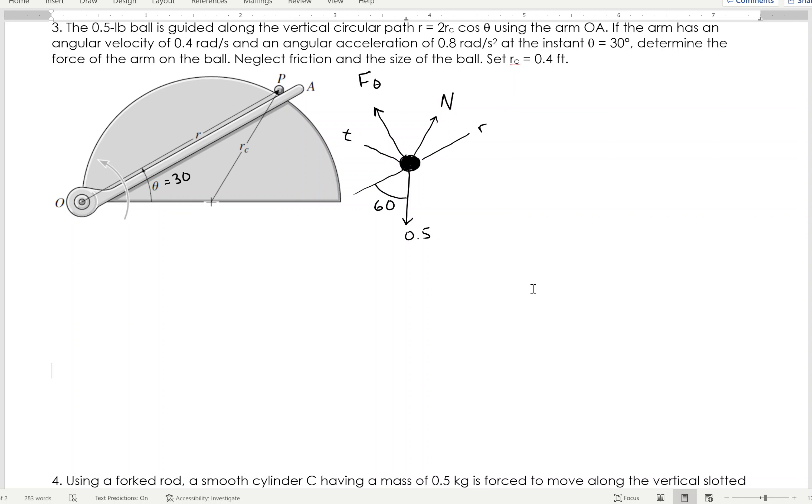It gives you an angular velocity, that'd be theta dot, angular acceleration, theta double dot, and a theta of 30 degrees. And it wants me to find the force of the arm on the ball, wants me to neglect friction and the size of the ball, R is given by that.